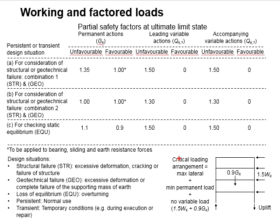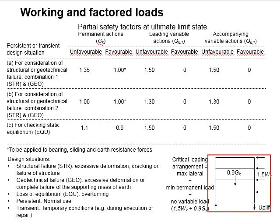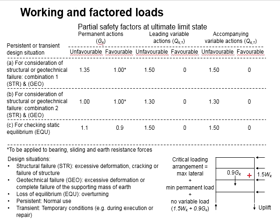With that, the most critical load arrangement is: GK multiplied by 0.9 due to favorable conditions, and the wind load multiplied by 1.5 due to unfavorable conditions. This gives the most critical situation for the structure. In this case, the wind load is more critical than QK, since QK is not considered in the static equilibrium condition.